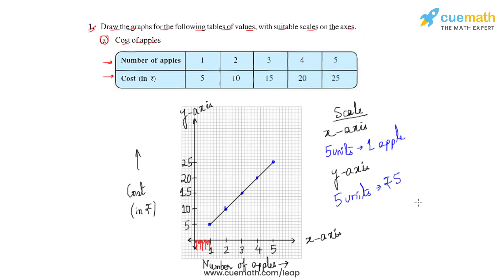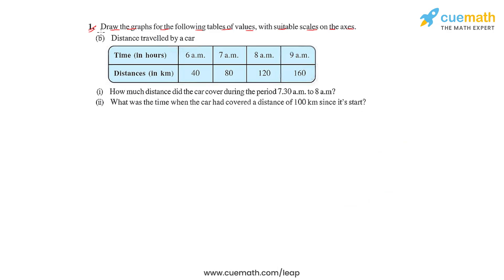Let us now see the next tables of values. In this part, we have distance travelled by a car. So basically time in hours and the distance in kilometres are given. We'll have to use these two things to plot a graph, and then based on our observation of the graph, we will have to answer the questions that follow. Let us first plot these values on this graph.